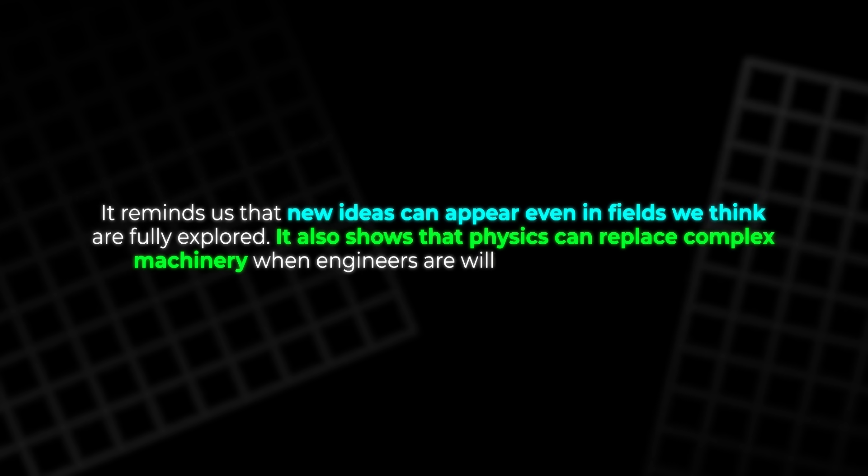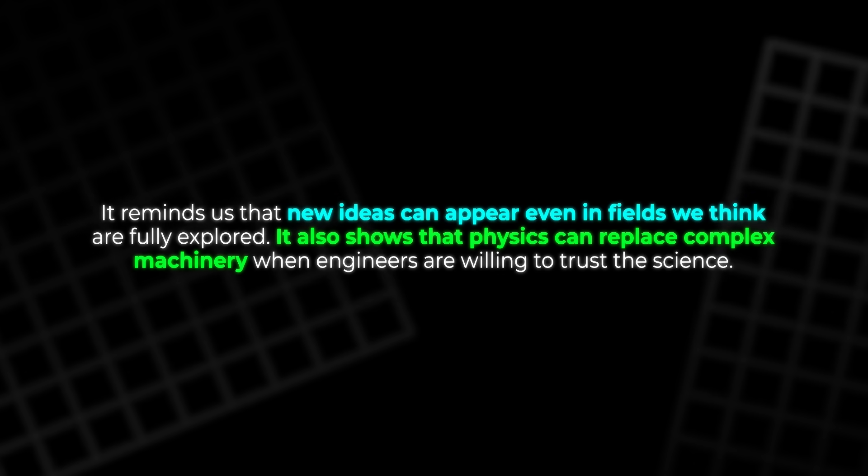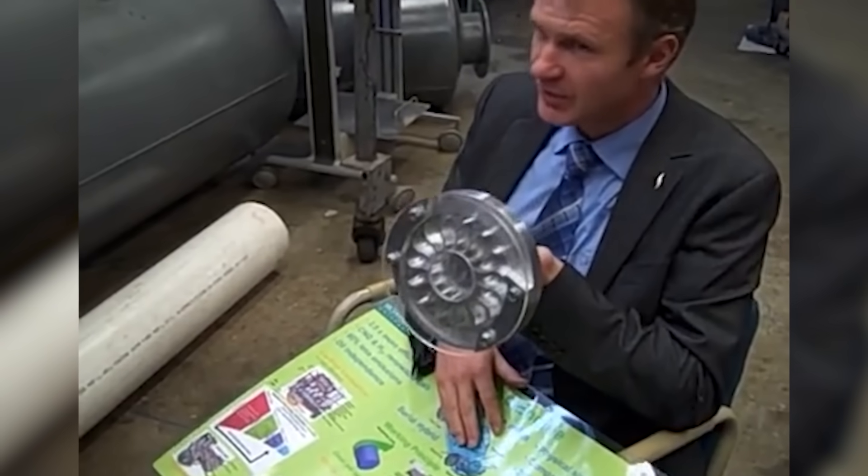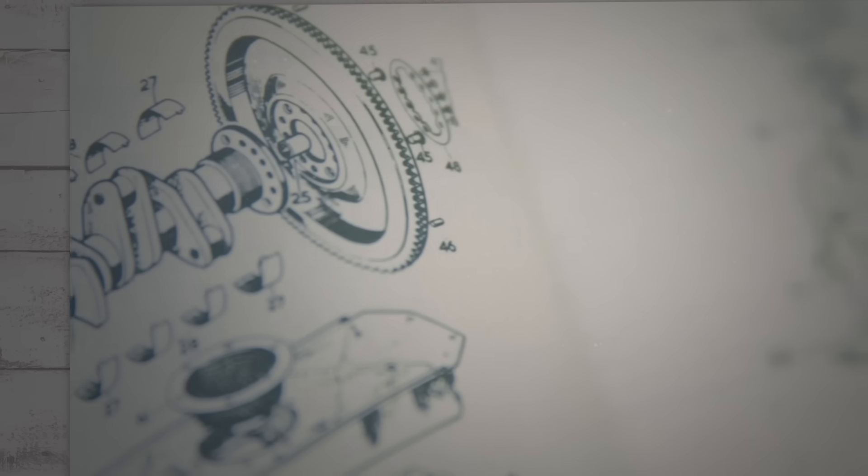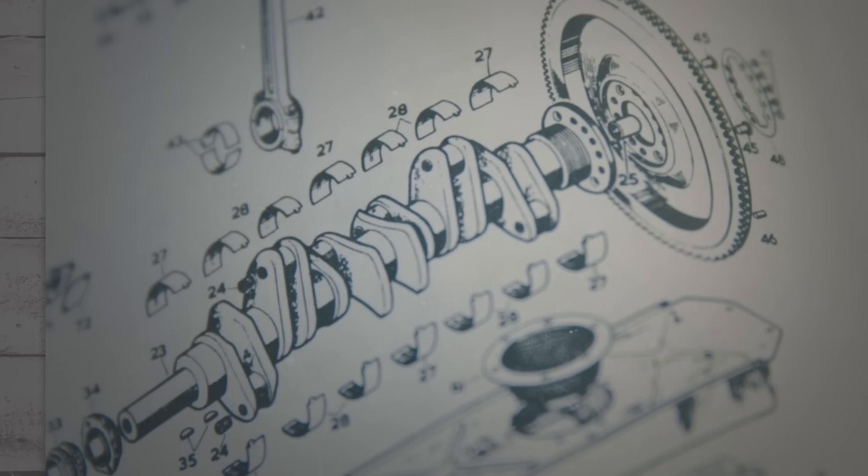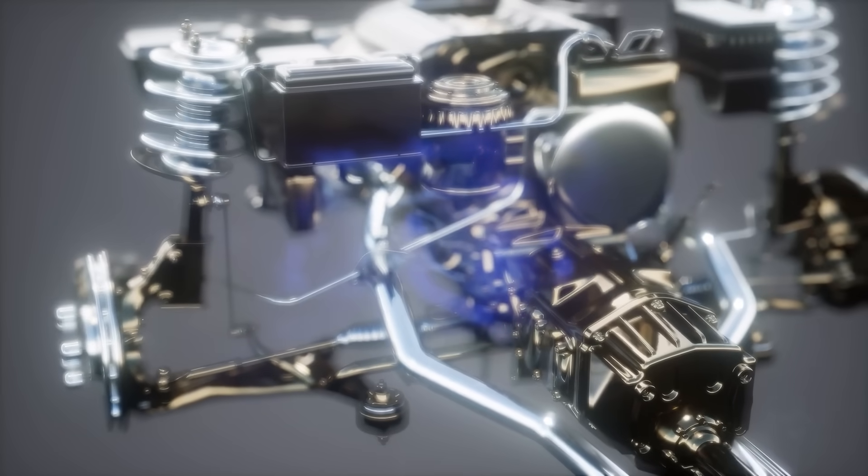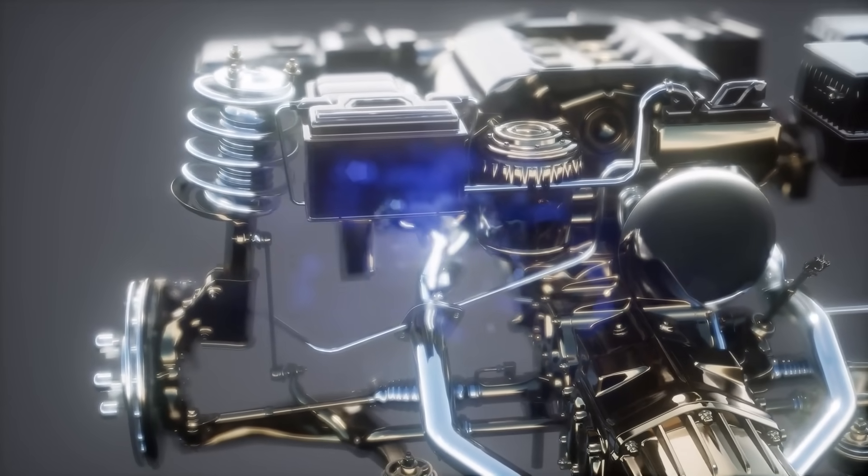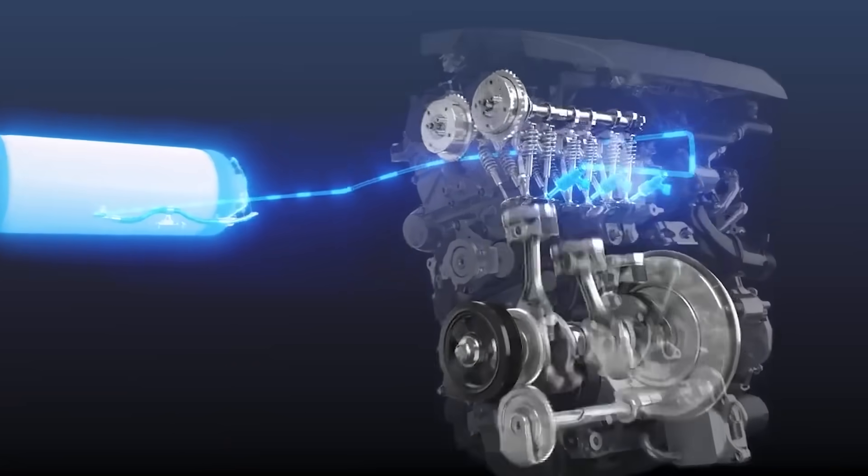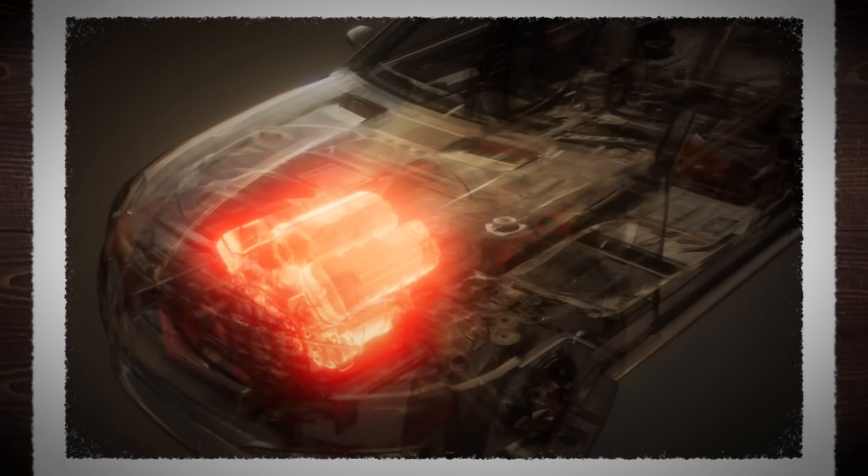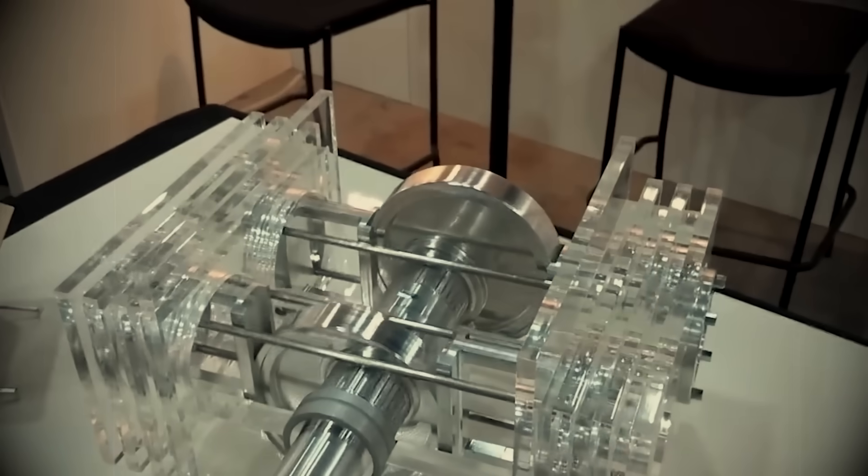It remains one of the most promising designs for compact power generation. Small drones, portable generators, and hybrid systems could all benefit from a tiny, efficient engine that burns clean fuel and has very few moving parts. Hydrogen-powered versions could fit well into a low-carbon future, and as battery technology reaches its limits for certain uses, engines like this may return to the spotlight. The wave disc engine proves that combustion still has room for innovation. It reminds us that new ideas can appear even in fields we think are fully explored. It also shows that physics can replace complex machinery when engineers are willing to trust the science.